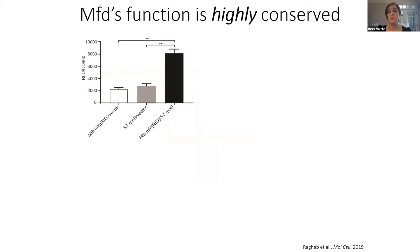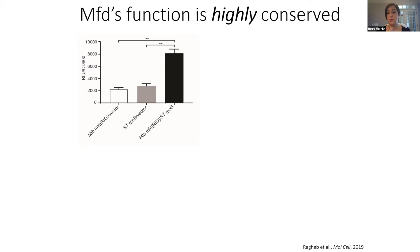How highly conserved is MFD? In a bacterial two-hybrid assay, we're looking at the interaction of mycobacterium tuberculosis MFD with Salmonella typhimurium RNA polymerase. MTB is quite distinct from Salmonella — they're very far apart in their lineages. Yet the MTB-MFD interacts with Salmonella RpoB to the same degree as Salmonella's own MFD. This interaction is highly, highly conserved.